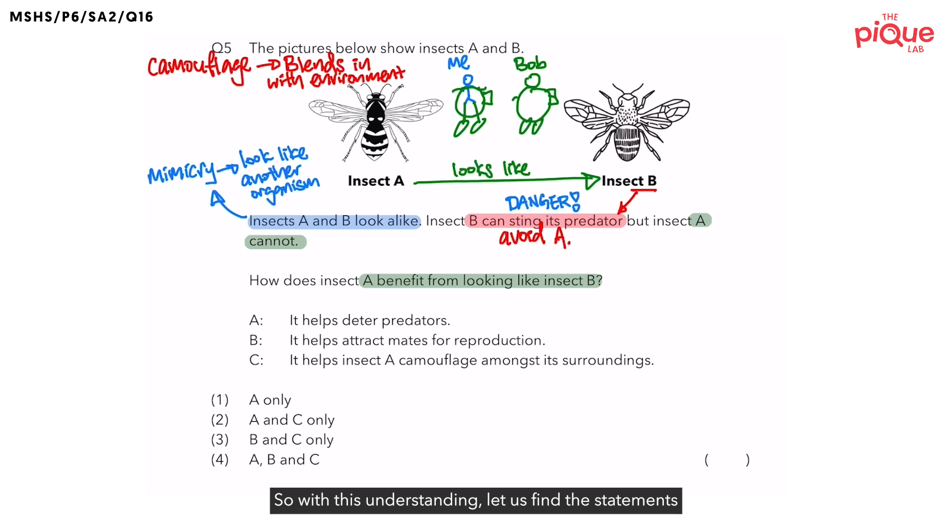So with this understanding, let us find the statements that explain the benefit of Insect A looking like Insect B. Statement A, it helps deter predators. What does this word deter mean? It means to keep away. So statement A is saying that when Insect A looks like Insect B, it keeps the predators of Insect A away. According to our discussion just now, we see that predators of Insect A will avoid feeding on Insect A. So is statement A a benefit for Insect A? Yes, let us put a tick.